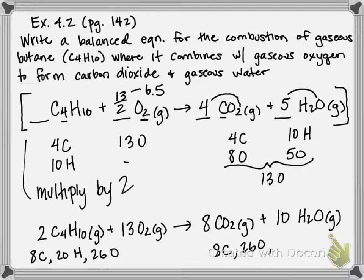And then for hydrogen, it's going to be 10 times 2, which gives us 20 hydrogen. So our carbons balance 8 on each side, our hydrogens balance 20 on each side, and our oxygens balance 26 on each side.